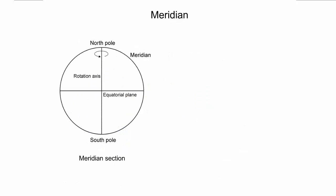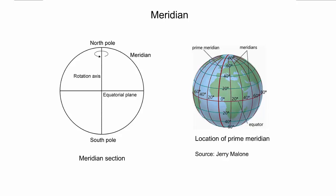Cutting the Earth with a plane that contains a meridian forms a meridian section, as shown to the left for the spherical Earth model. The prime meridian is the meridian from which other meridians are reckoned. It is like any other meridian except that it passes through the Royal Observatory, Greenwich, which is located in London, England.